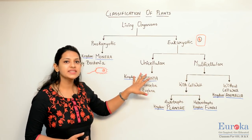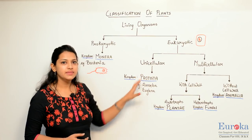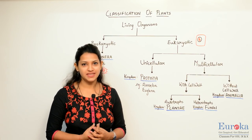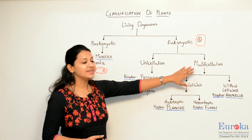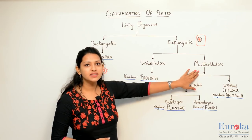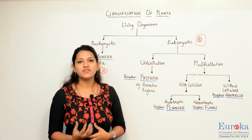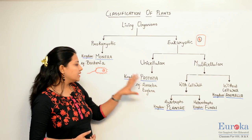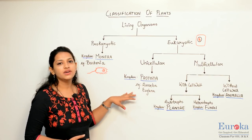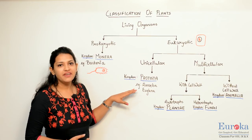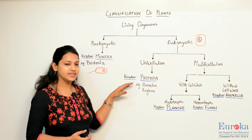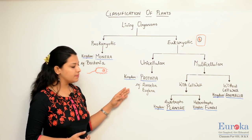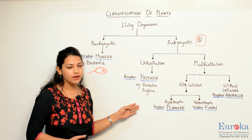In unicellular organisms, it is a single cell which carries out all the functions. Whereas in multicellular organisms, more than one cell is involved. Under unicellular organisms, we have the kingdom Protista. Examples are amoeba and euglena.